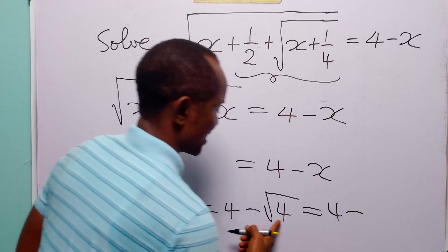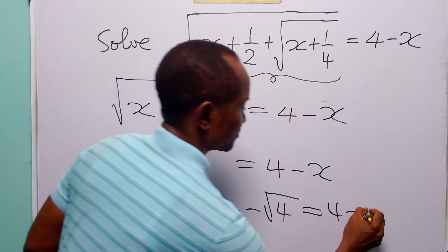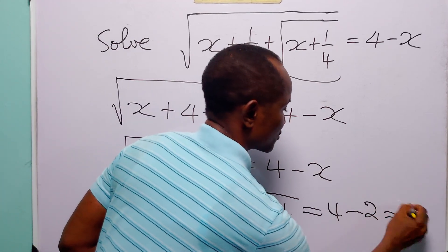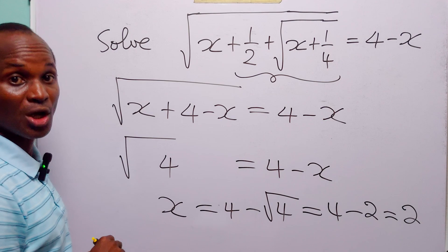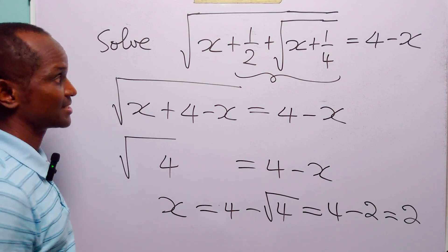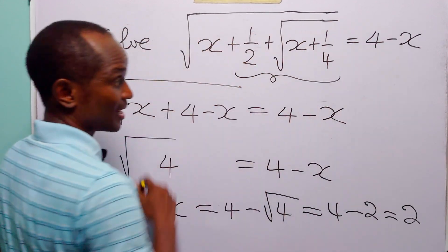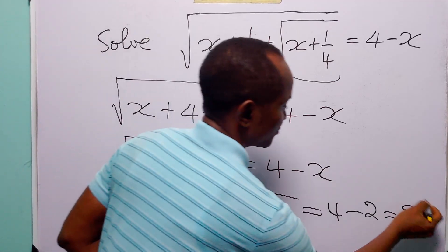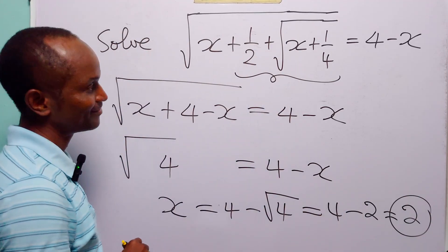When we rearrange the equation we have that x is equal to 4 minus the square root of 4. Now 4 minus the square root of 4 is 4 minus 2, which is equal to 2. So we have that the value of x that satisfies this radical equation is x equal to 2.